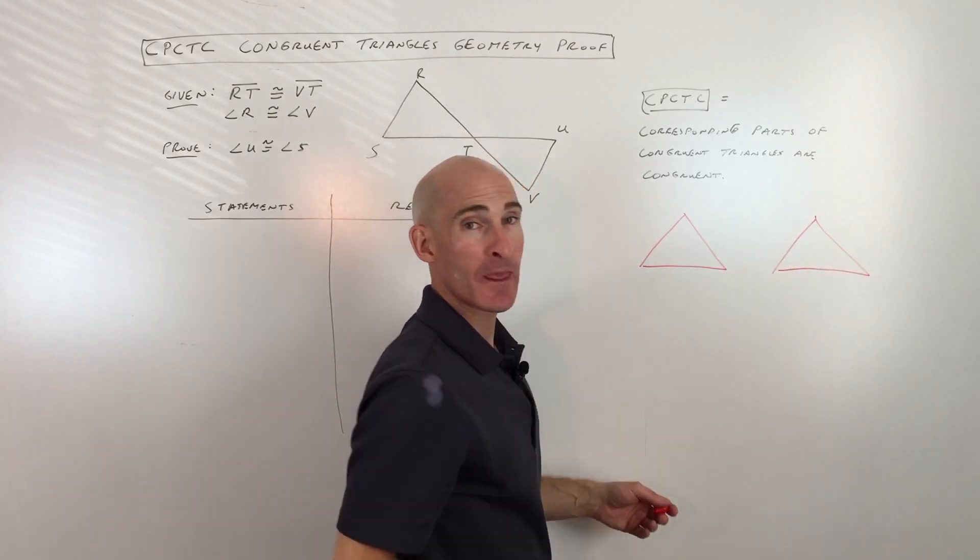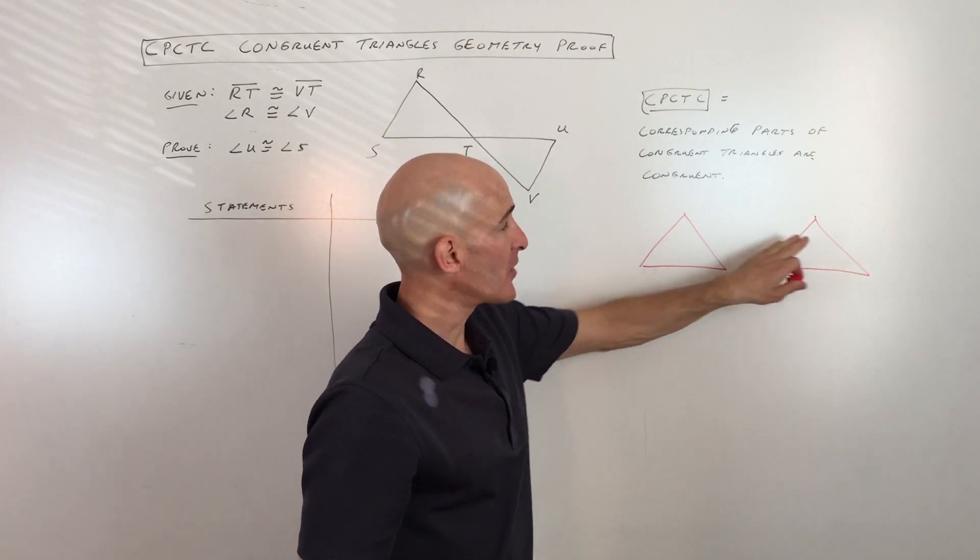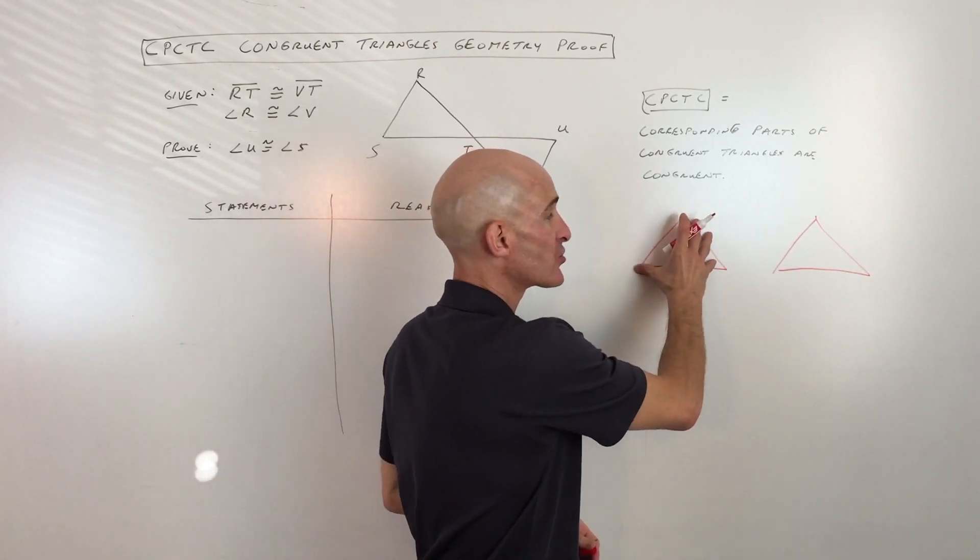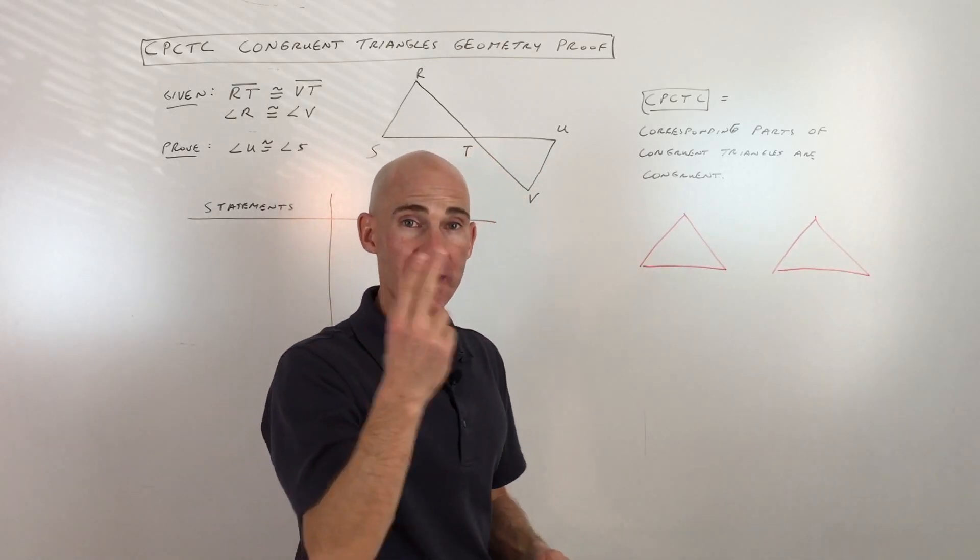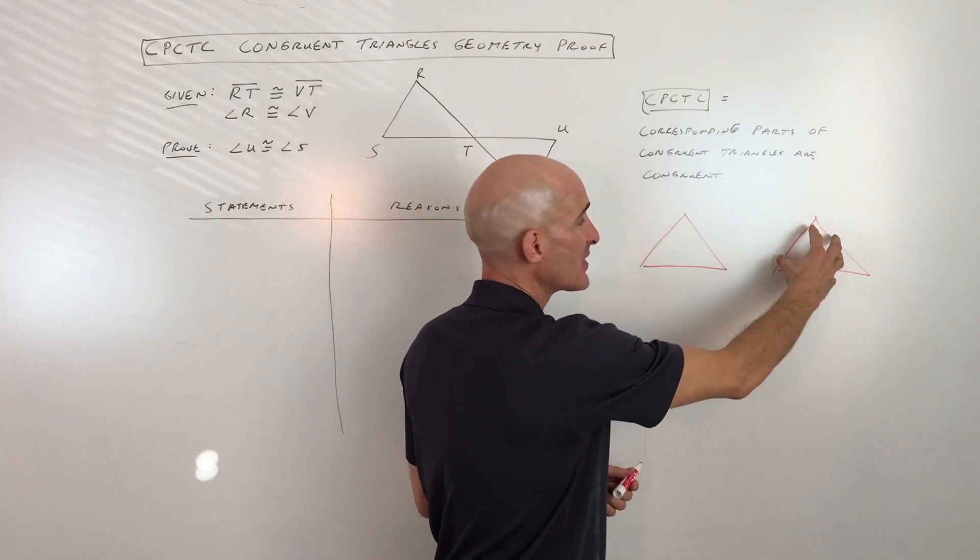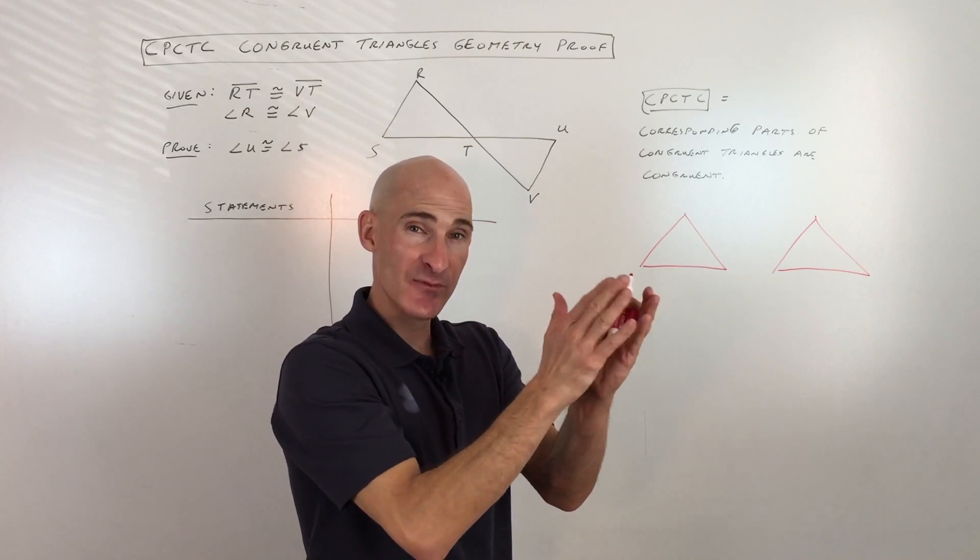Let's say we have two triangles like so. Say that we can prove that these triangles are congruent, like this entire triangle is congruent to this entire triangle, meaning if I take some scissors, I cut it out, I place it on here, they're going to be exactly the same, they're going to match up perfectly.